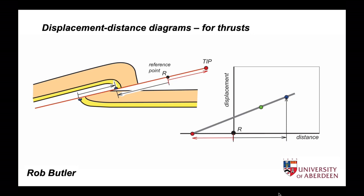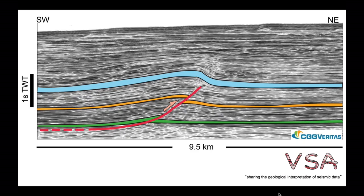Thrusts, just like any other fault, can show variations in their displacement, and displacement distance diagrams are useful ways for illustrating and analysing these variations. Let's look at this seismic interpretation from offshore Nigeria. It shows a thrust climbing from deep in the section and offsetting a green layer, then an orange layer, but not offsetting the blue layer. So in other words, the fault dies out upwards at a tip, and the blue layer beyond is folded into a tip-line fold.